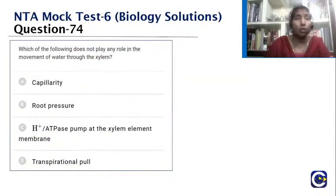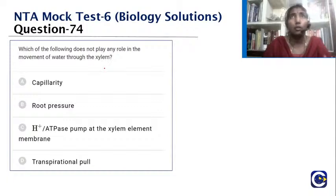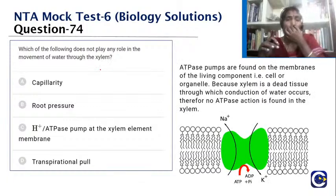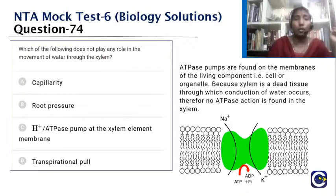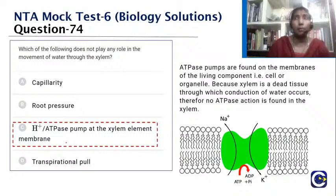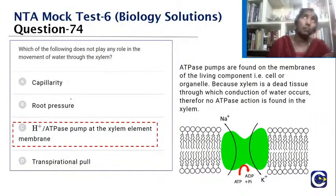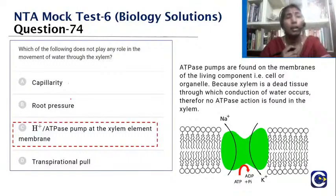Which of the following does not play any role in the movement of water through the xylem? Xylem is a dead tissue. The ATPS pumps are found on membranes of living components — they are not present on xylem element membranes. Capillarity, root pressure, and transpirational pull all contribute to xylem water movement, but root pressure only works for short distances. The right answer is C: H+ ATPase pump at the xylem element membrane.